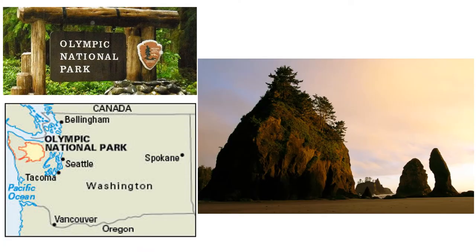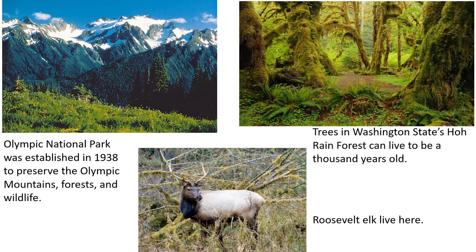The first stop on our tour is Olympic National Park in the state of Washington. Olympic National Park is known for its very diverse ecosystems, with glacier-capped mountains, old-growth rainforests, and about 70 miles of wild coastland. It was established in 1938 to preserve the Olympic Mountains, the forest, and wildlife. You can see on the right the one rainforest that exists in North America — this is Hoh Rainforest, and many of these trees can live to be a thousand years old. One particular animal you may see is the Roosevelt elk, which are prevalent in the Olympic National Park.